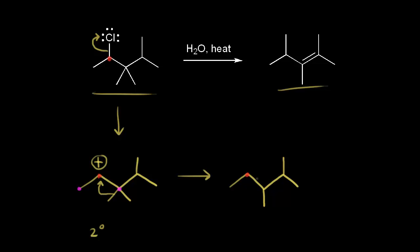We moved a methyl group to the carbon in red, so we took a bond away from the magenta carbon — that's where the positive charge is now. We have a plus one formal charge on the carbon now labeled in light blue, and this is a tertiary carbocation.